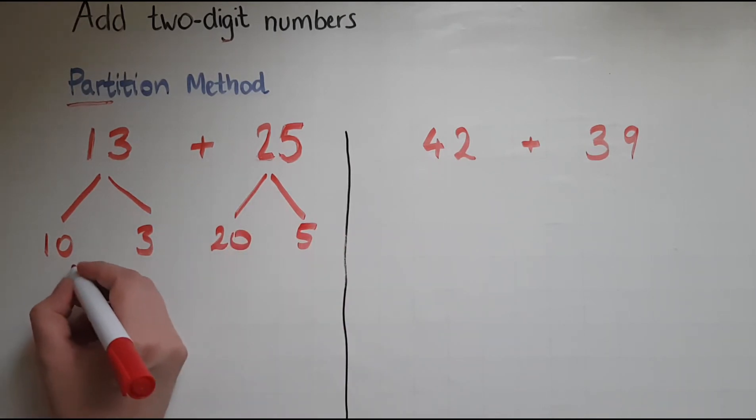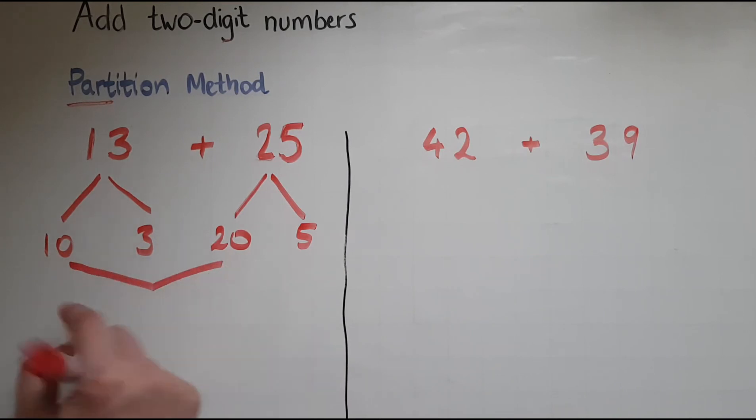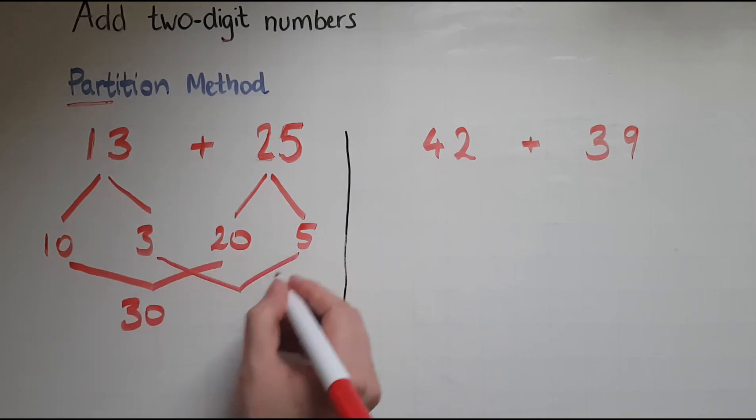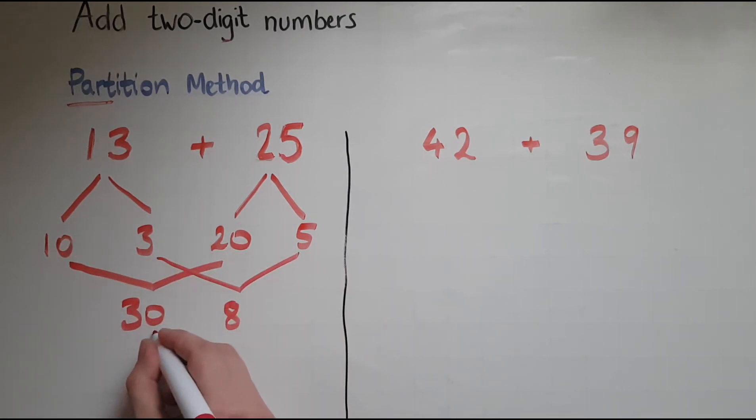Now it's easy for me to add the tens together. So we've got 10 and 20 makes 30. 3 and 5 makes 8. So 30 and 8 makes 38.